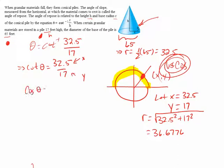Cosine of theta, if this is x and this is y and this is r, we've got cosine is x over r, so that's going to be 32.5 over 36.6776.